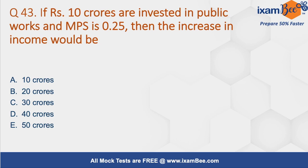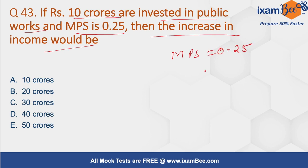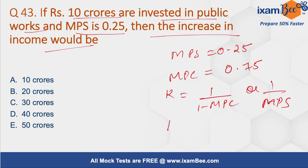Question number 43: If 10 crore rupees are invested in public works and MPS is given, find the increase in income. MPS is given as 0.25, so MPC becomes 0.75. The multiplier is 1 divided by (1 minus MPC), or equivalently 1 divided by MPS. So the multiplier equals 1 divided by 0.25, which equals 4.